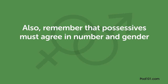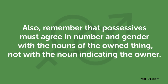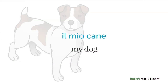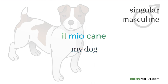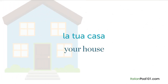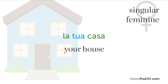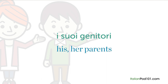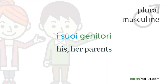So we say 'il mio cane' — my dog — where 'mio' is singular masculine because 'cane' is singular masculine. 'La tua casa' — your house — where 'tua' is singular feminine because 'casa' is singular feminine. 'I suoi genitori' — his/her parents — where 'suoi' is plural masculine because 'genitori' is plural masculine, and so on.